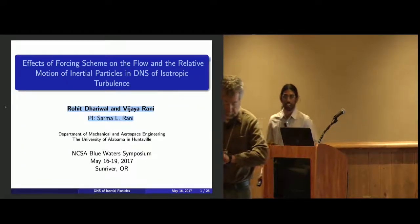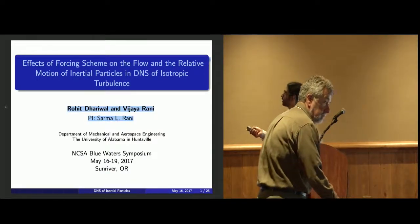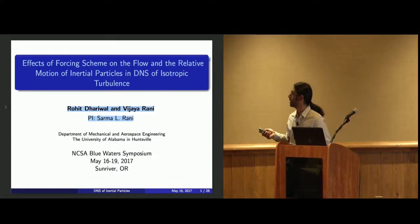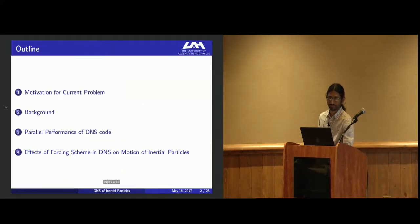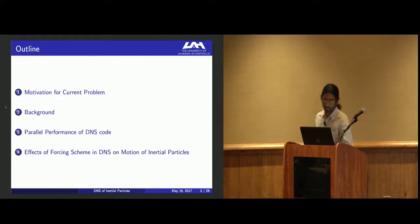Good evening all. As mentioned earlier, my talk is on the effects of forcing scheme on the flow and the relative motion of inertial particles in DNS of isotropic turbulence. I'm going to describe the motivation for the current problem, provide a brief theoretical background, provide some parallel performance of the DNS code, and finally present results showing the effects of forcing scheme on DNS of these inertial particles.